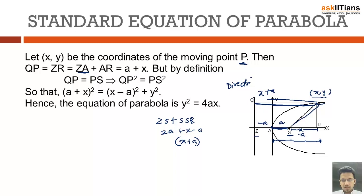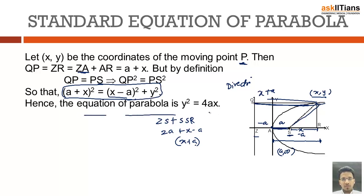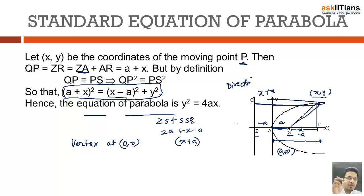This distance is x + a. Setting it equal to the distance from focus (a, 0): √[(x − a)² + y²] = x + a. After solving this equation we get y² = 4ax. This is the simplest parabola having its vertex at the origin (0, 0), with the axis of symmetry being the x-axis.